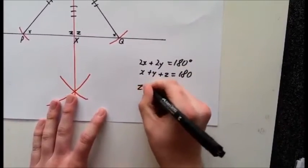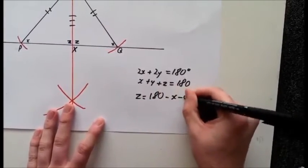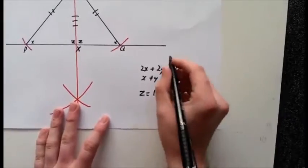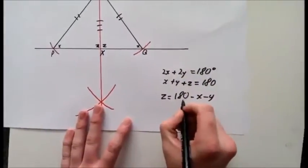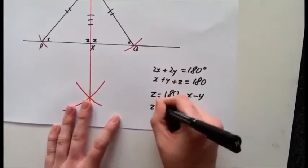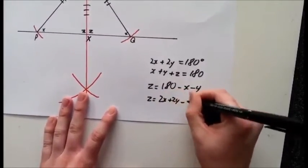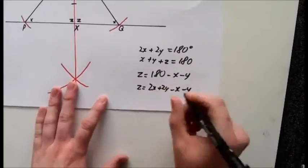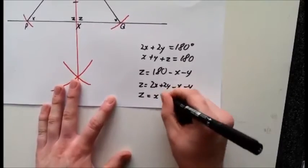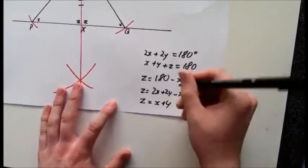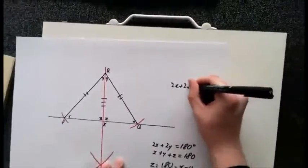So Z = 180 - X - Y. I will substitute the first equation here for 180 degrees, so Z = 2X + 2Y - X - Y. That means Z = X + Y, and we know that 2X + 2Y is equal to